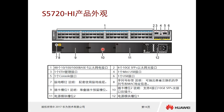The S5720 is the industry's first agile switch. It adopts a fully programmable architecture with software-defined capability. It provides rich agile features — for example, it has the functionality of an AC (access controller), which means the switch supports both wired and wireless functions through deep fusion integration.